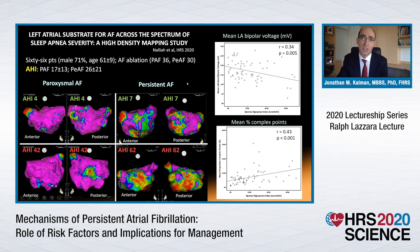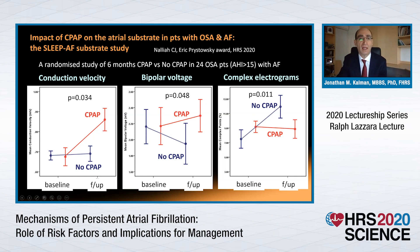Persistent AF patients have more severe sleep-disordered breathing. A small randomised study — awarded the Eric Pristowski Award at Heart Rhythm 2020 — randomised AF patients to CPAP or no CPAP in the six months prior to ablation. There was indeed evidence of reverse remodelling with treatment: improvements in conduction, improvements in bipolar voltage, and reduction in complex electrograms — all significant when compared with the untreated group.